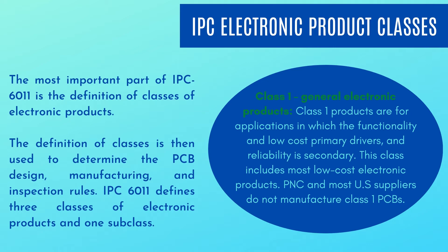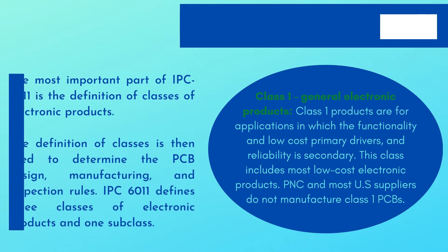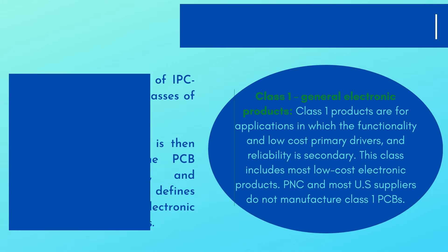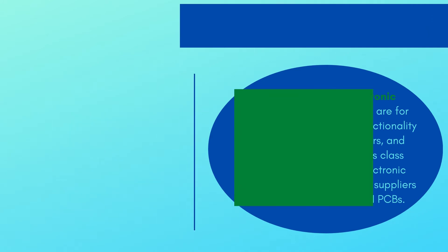Class 1, General Electronic Products: Class 1 products are for applications in which functionality and low cost are the primary drivers, and reliability is secondary. This class includes most low-cost electronic products. PNC and most U.S. suppliers do not manufacture Class 1 PCBs.